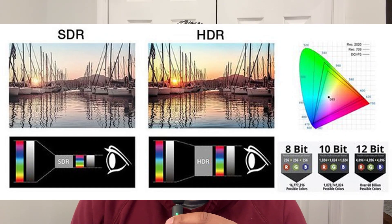This can lead to blown-out highlights in bright scenes and crushed blacks in dark ones. That's where HDR 10 Plus comes in — it uses dynamic metadata. This means the picture settings are adjusted scene by scene, or even frame by frame, so your TV is getting precise instructions on how to display each moment. This leads to a much more accurate and consistent picture with better details in both bright and dark areas.